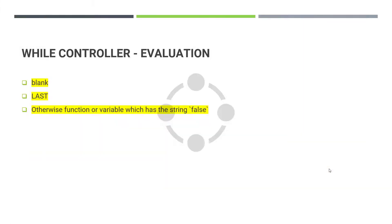There are three possible values inside the condition. It could be a blank value, or it could be the keyword 'last', or it could be a function or variable which evaluates and returns the value false.